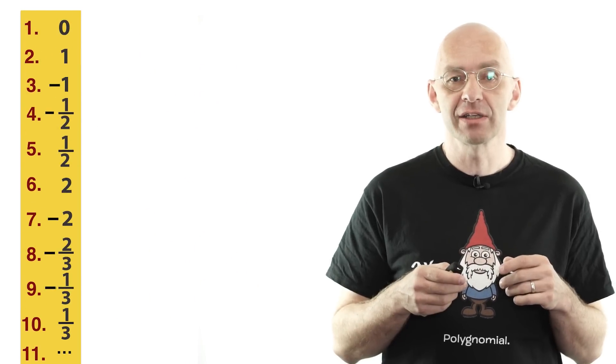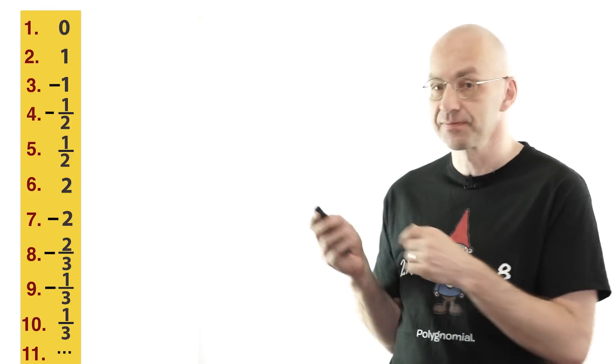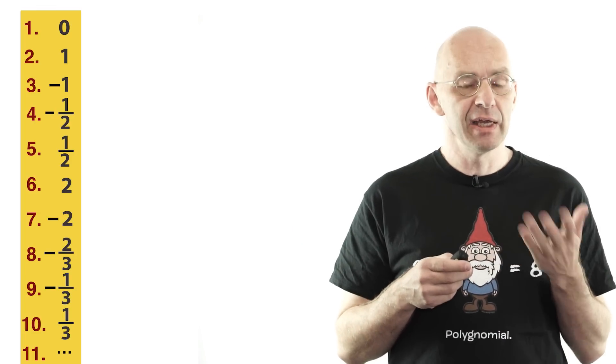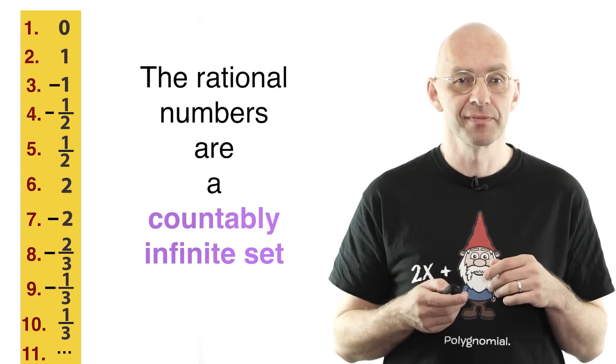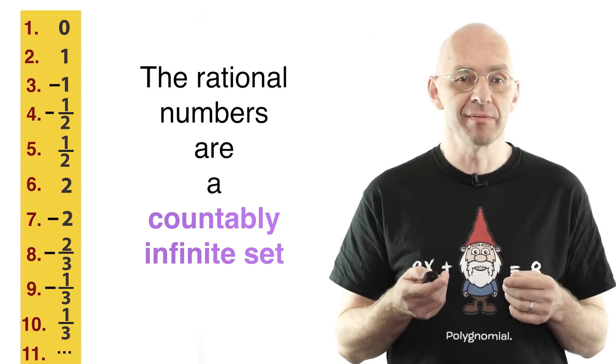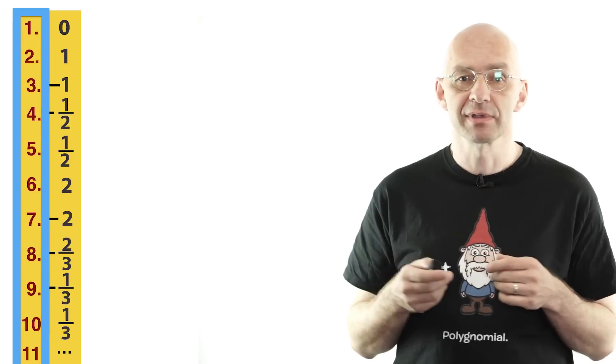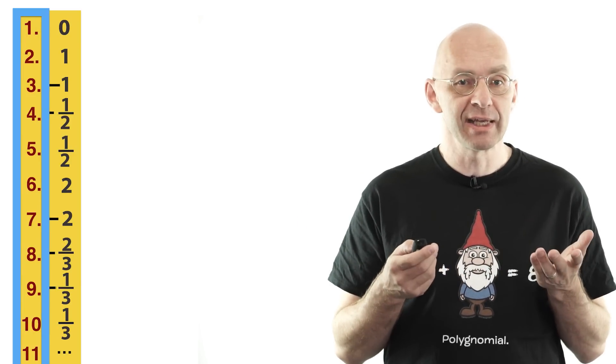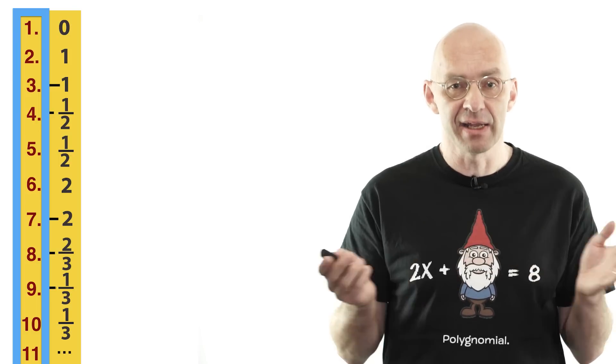The fact that made this neat construction possible was that the rational numbers can be listed like this. Infinities of numbers that can be listed like this are called countably infinite. As part of such an infinite list, we enumerate the elements of the countably infinite set with the natural numbers.